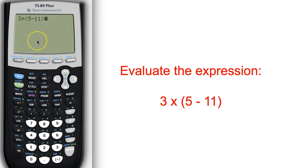And this will tell the calculator to perform the operation 5 minus 11 first and then multiply. The calculator has an inherent understanding of the order of operations.